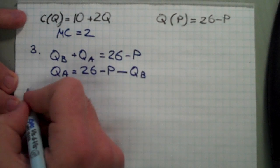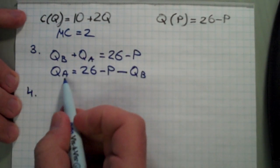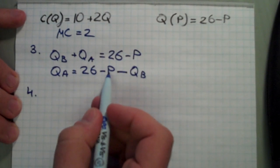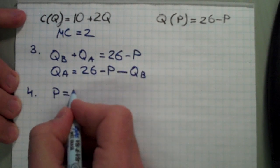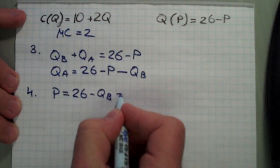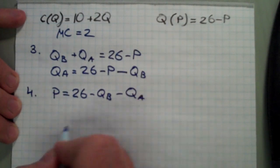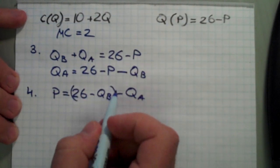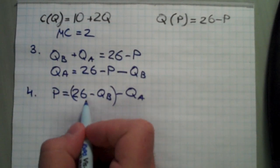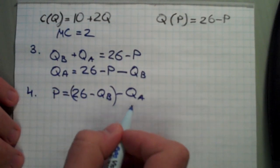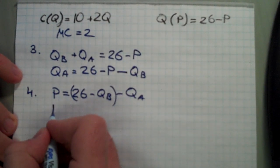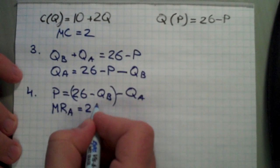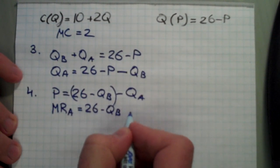To calculate the marginal revenue of firm A, we first need to find the inverse demand. We carry P over: P equals 26 minus QB minus QA. Now, remember the magic formula for marginal revenue — if we have the intercept and the slope, we keep the intercept the same and double the slope. So marginal revenue of firm A equals 26 minus QB minus 2QA.